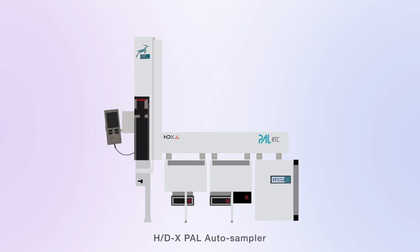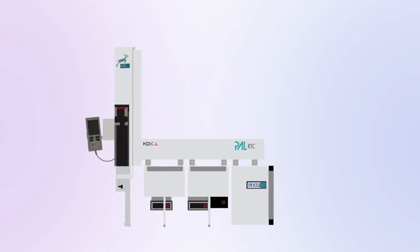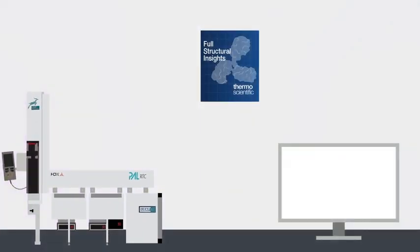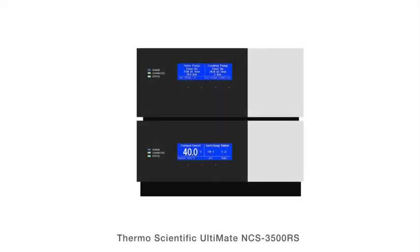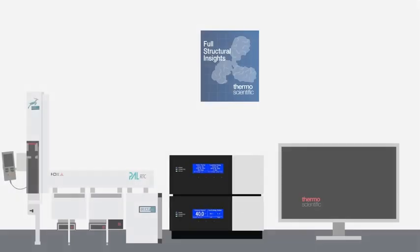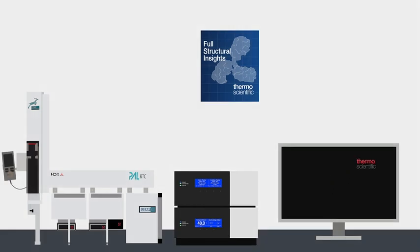Sample preparation and labelling steps are performed using the HDX PAL Auto Sampler from Leap Technologies. All of the features are available through software control that integrates seamlessly with Thermo Scientific Excalibur software. Exceptional flow precision is delivered using the Thermo Scientific Ultimate NCS 3500 RS-LC system, which combines a binary high-pressure gradient pump and a ternary low-pressure micro-loading pump for absolute experimental control.